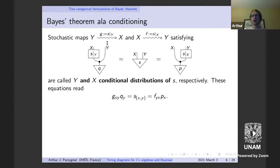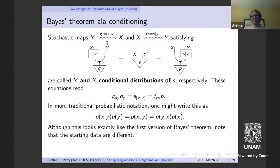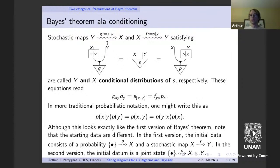Written on elements, s subscript x,y is the joint distribution at point (x,y). Although this looks exactly like the first version, the starting data are different — which is very important categorically. In the first version, the input is a probability on X and a stochastic map from X to Y. In the second version, the input is just a joint state. In the quantum setting, you could have different notions because of this distinction.